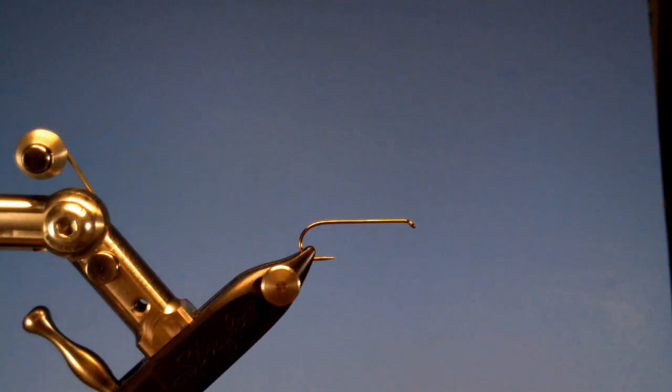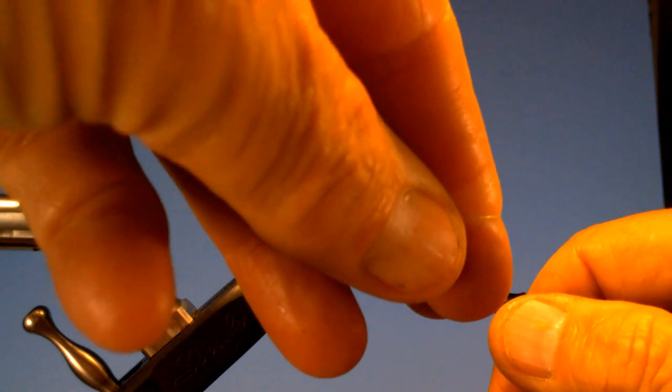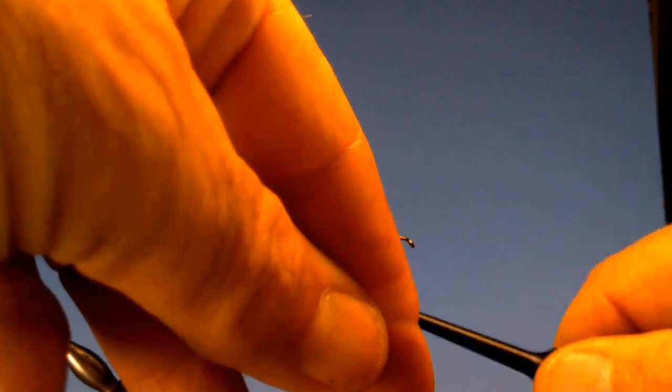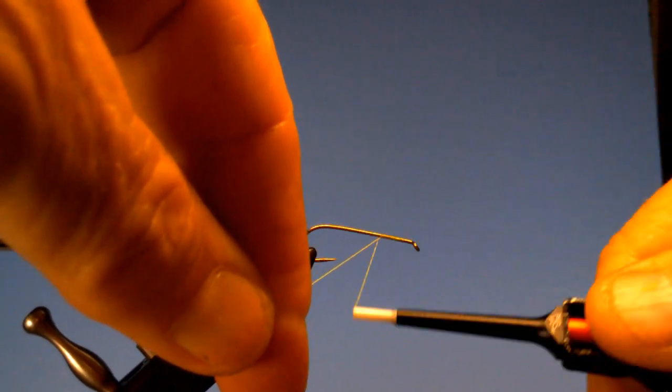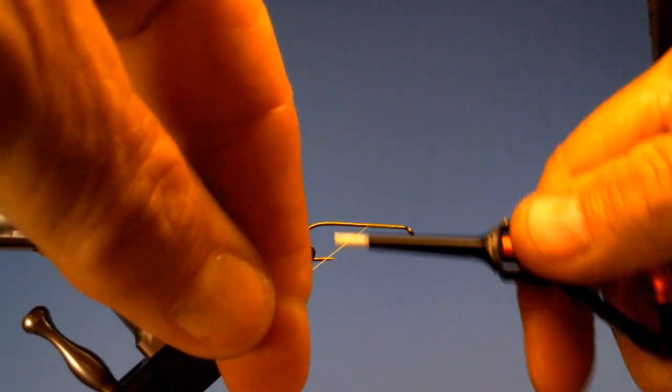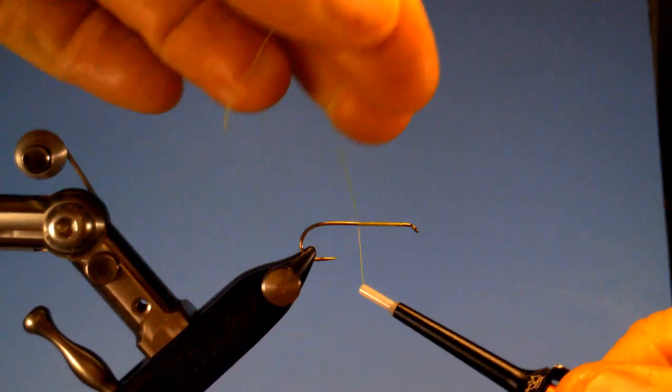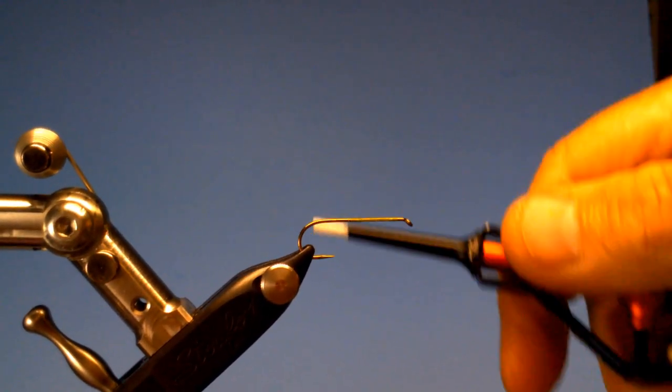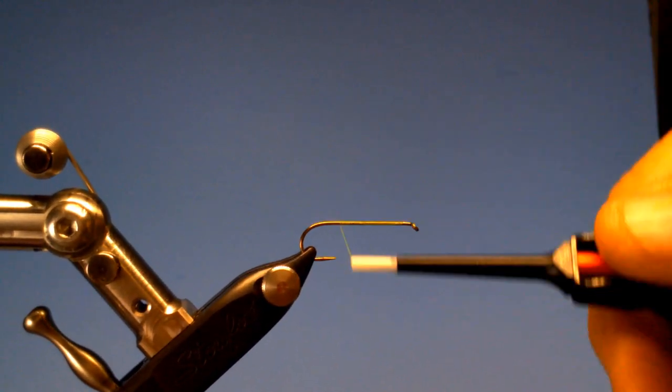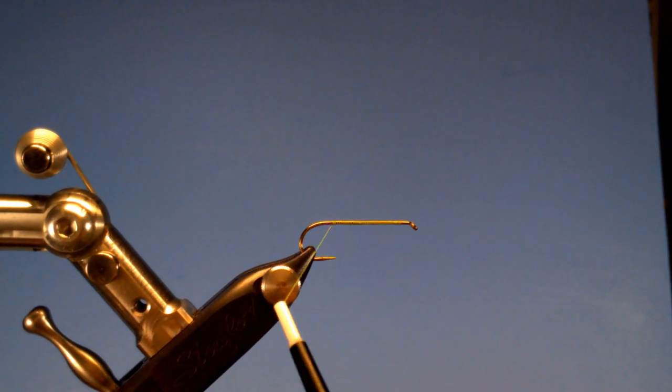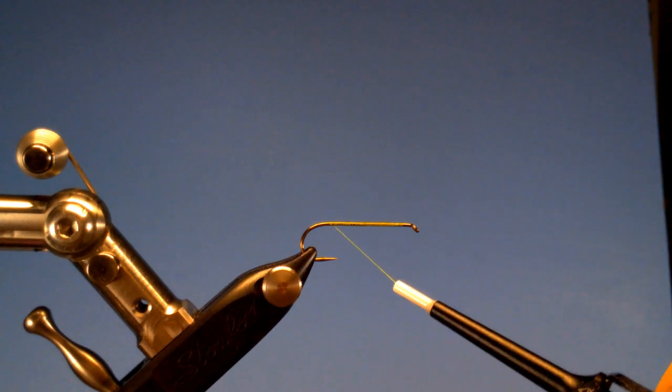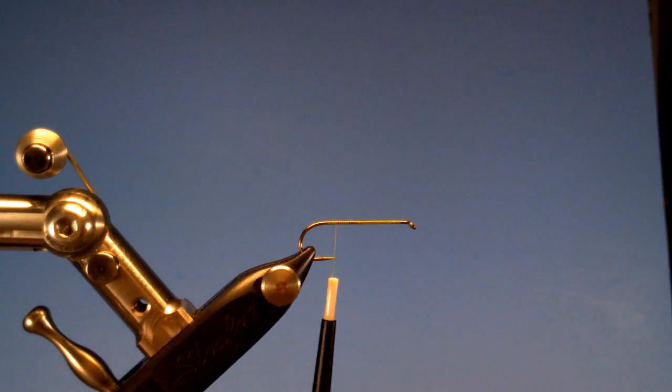And the thread we're going to use, we're going to use some 6-Ot in chartreuse, since we're making a chartreuse body. And we'll just start this right back behind the eye of the hook and build up a wrap of thread. And we'll take it back to where the barb used to be. Move it forward a little bit.